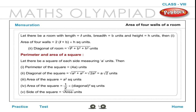3. Area of the square is equal to A² square units. 4. Area of the square is equal to ½ × (diagonal)² square units. 5. Side of the square is equal to √(Area) units.